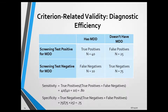Sensitivity is the proportion of people with the disorder who are correctly identified by the test as having the disorder. It's calculated by dividing the true positives by the true positives plus the false negatives. For the data in the slide, the screening test sensitivity is 40 divided by the sum of 40 plus 10, which is 0.80. This means that for people who have the disorder, there's an 80% chance that the results of the screening test will be positive.